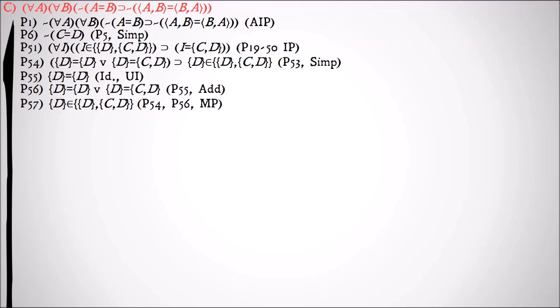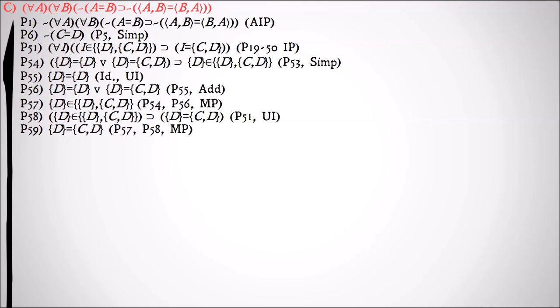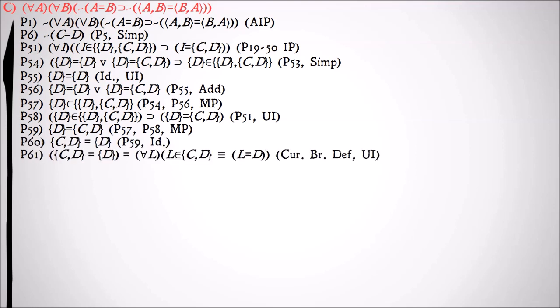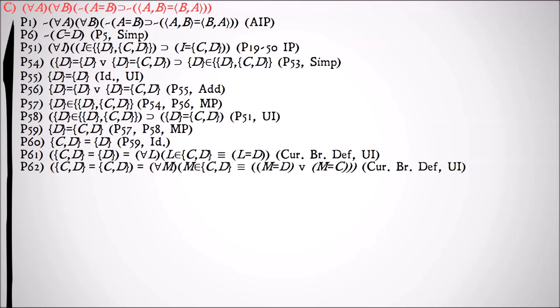Now, this is of course a problem if the set of D doesn't equal the set of CD, and that would only be the case if C and D equal each other. So we're going to universally instantiate premise 51 to show that the set of D is equal to the set of CD — because we showed that for any member of this set D CD, that has to be just CD. We'll use identity to flip those around. And then, once again, our curly bracket definition to say that for all L, L is a member of CD is materially equivalent to L equals D, because those sets are identical. And then by curly bracket definition again, we have CD's definition based on CD: that M is a member of CD means that M equals D or M equals C. So, for all M, the rest of that is still true. We can universally instantiate 64 to get: C is a member of CD is materially equivalent to C equals D or C equals itself.